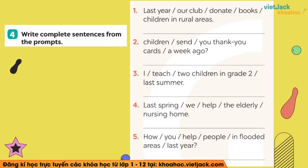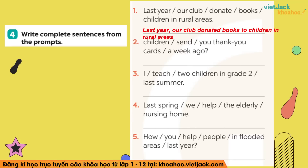Câu số 1: mình có last year — dấu hiệu của thì quá khứ đơn rồi. Ở đây mình có chủ ngữ là our club và động từ là donate — thì động từ mình phải chia sao cho phù hợp với cả thì và chủ ngữ. Câu số 1 sẽ có là: Last year our club donated books to children in rural areas — năm trước thì câu lạc bộ của chúng tôi đã quyên góp sách cho những bạn trẻ ở vùng nông thôn.